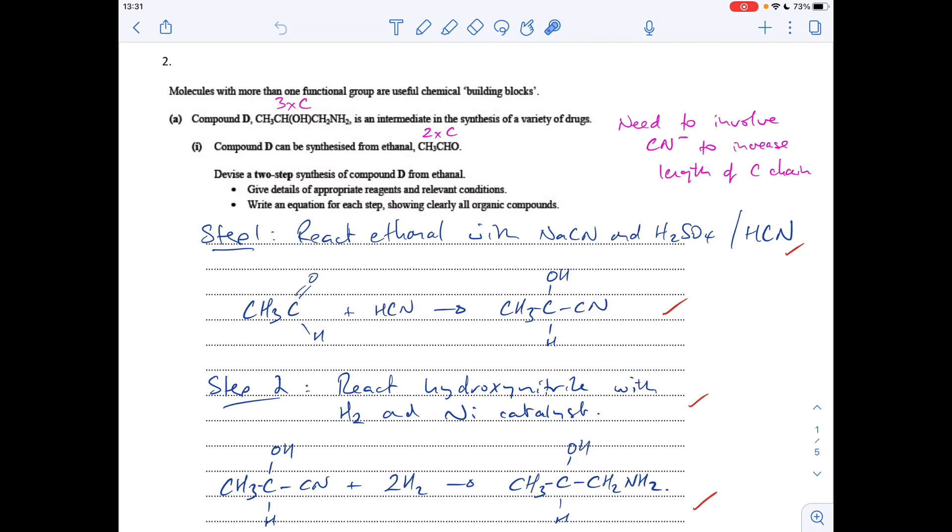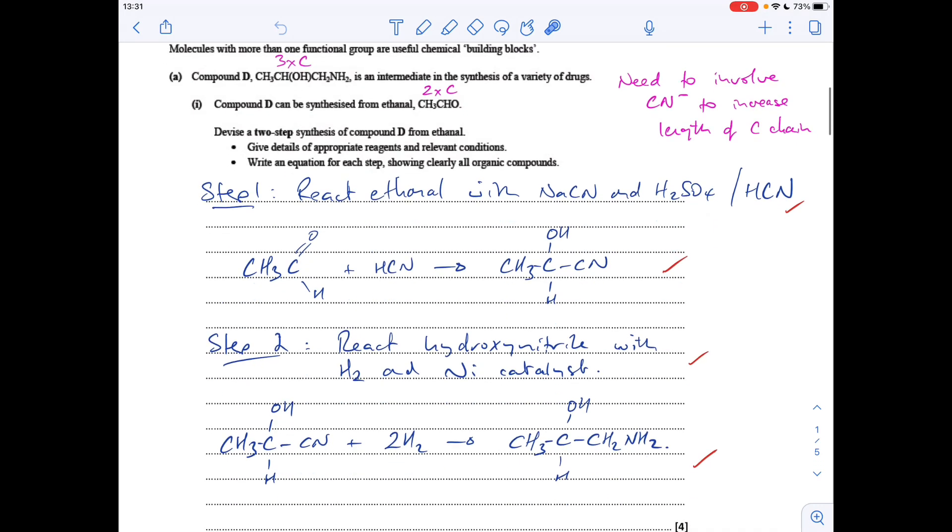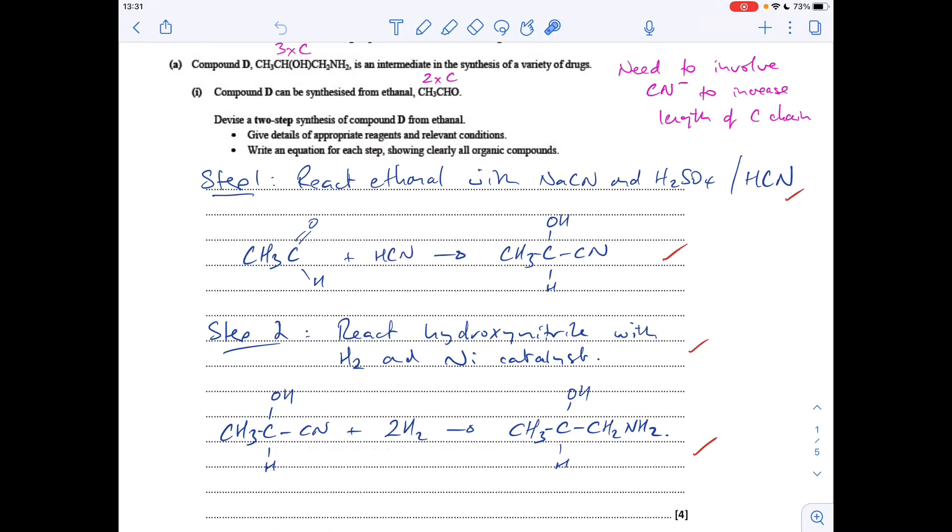Step two now, we've got to convert this nitrile group into an amine group, so that's done by reacting with hydrogen and a nickel catalyst. There's the equation there, we need two moles of hydrogen, and you can see the CN functional group changes to CH2NH2. So you can see it's four more hydrogens gone in, so we need two H2s.